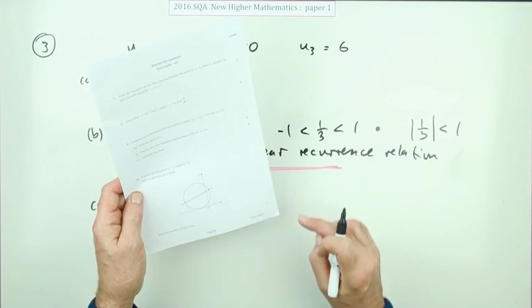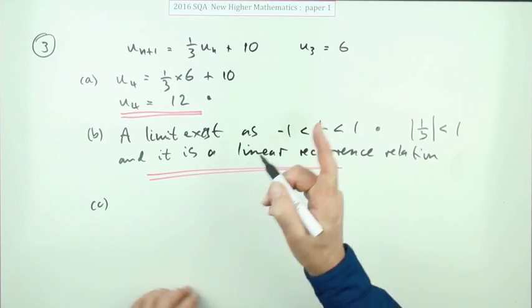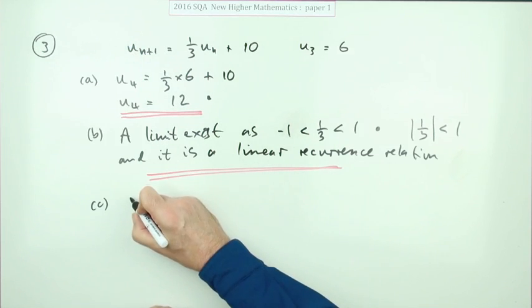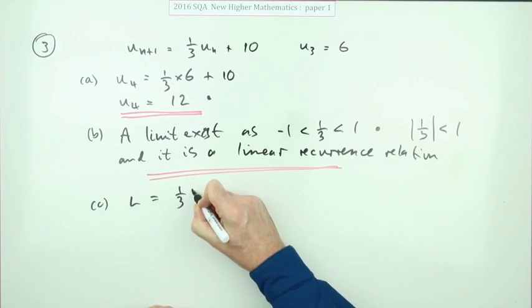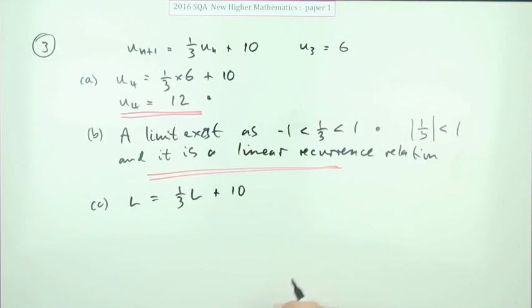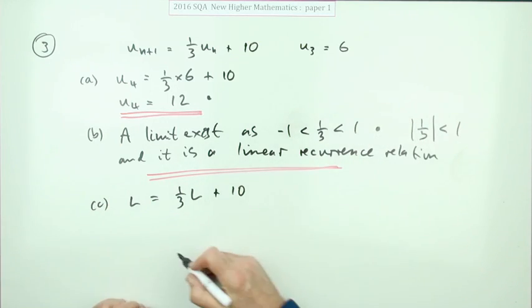And part C, so what is this limit for two marks? Well, there's two ways you could work it out. You could say it approaches a limit when whatever you put in results in the same answer. So if you put in some number L, you get out the same number. So you've stalled, you're at a fixed point, you've reached your limit, it's going nowhere else.